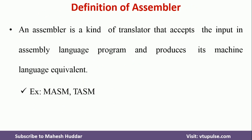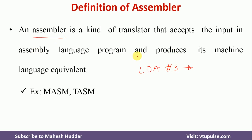An assembler is a kind of translator that accepts input in assembly language and produces its machine language equivalent. For example, an instruction like LDA #3 cannot be directly loaded into memory and executed because the computer cannot understand it. We have to convert this particular assembly language program into machine-understandable language — that is the task of the assembler.